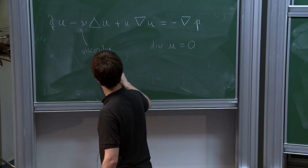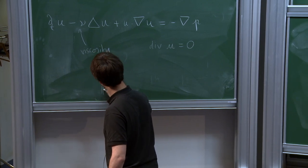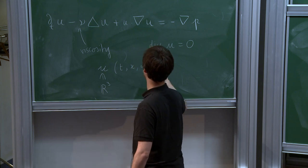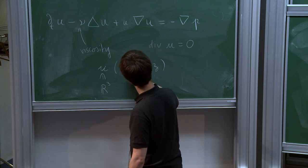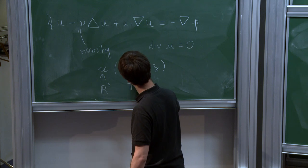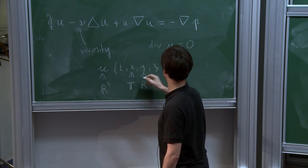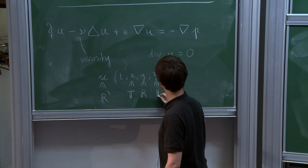Okay, so U is valued in R3 and it's a function of T, X, Y, Z. X is in the torus T, Y is in the real space, and Z is also on the torus.